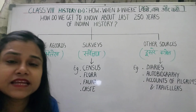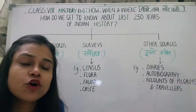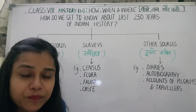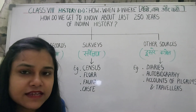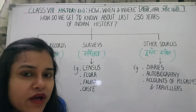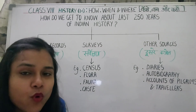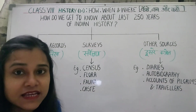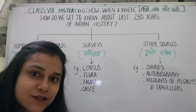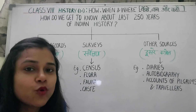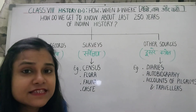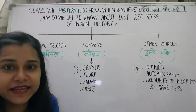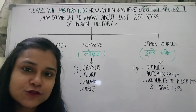Then there are other sources — unofficial sources, which were not the role of the government. So what do people think and feel? These are things we don't know from official records; we know them from other sources. People have written their feelings and their lives in diaries, and many people used to maintain a diary.